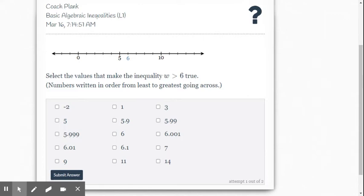So if you think about the number line, 6 is our dividing point. It's going to be an open point at 6 because 6 is not included in the solution.